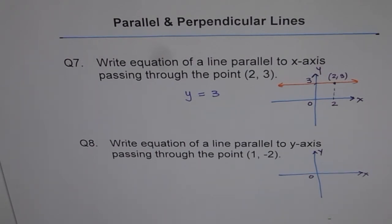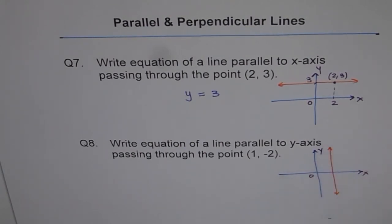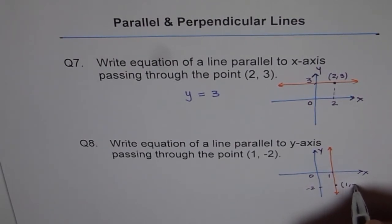So let's draw a line which could be parallel to this and going through this. So we'll draw this line. So that's the line which is parallel to y-axis. And it goes through the point, this, which is -2 for y and 1 for x. So it is (1, -2).